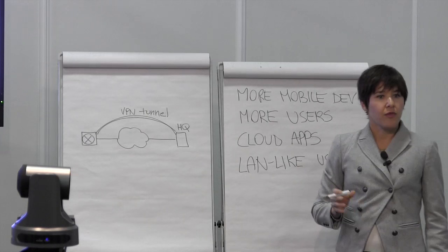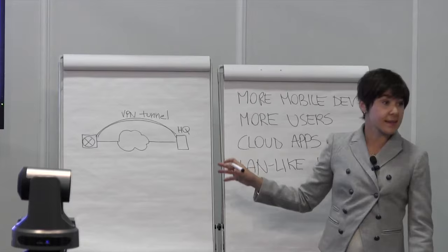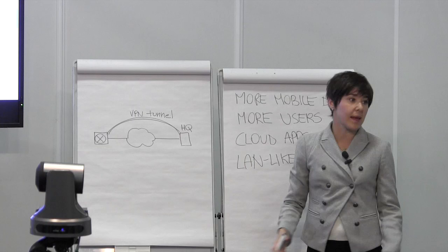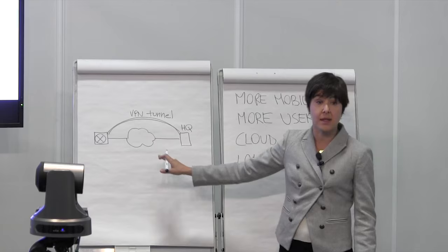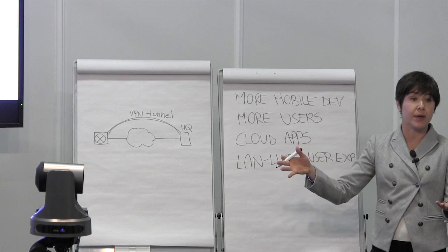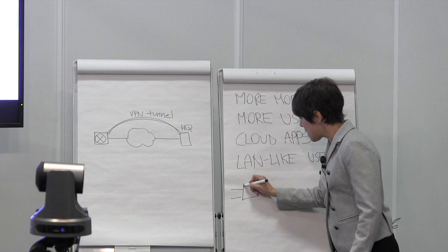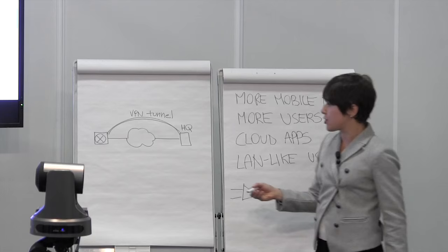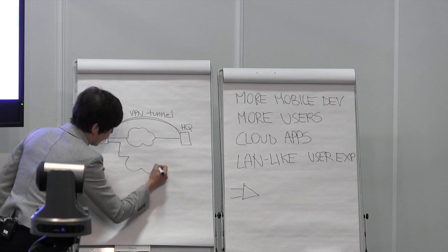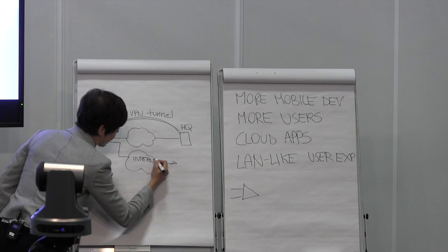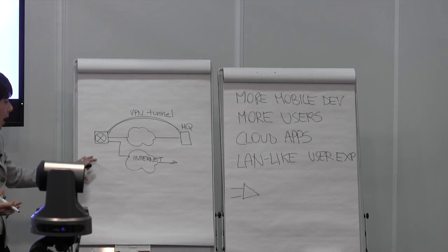Enterprises are challenged. On one side, their goal is to save costs by reducing bandwidth consumption and paying less for leased lines. At the same time, they need to provide the user experience their employees are expecting. So many customers are looking at ways to modernize their WAN transport, and one of them is to leverage the local internet path for some or all of the traffic generated at the branch. We call this direct internet access.